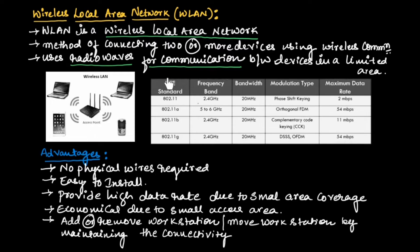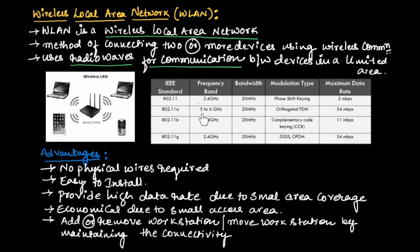Wireless local area network works on IEEE standards. The 802.11 standard operates at a frequency of 2.4 GHz with a bandwidth of 20 MHz, uses frequency shift keying modulation, and has a maximum data transfer rate of 2 Mbps. Similarly, 802.11a operates in the 5 to 6 GHz frequency band with a bandwidth of 20 MHz.